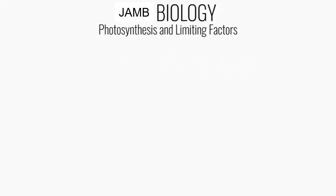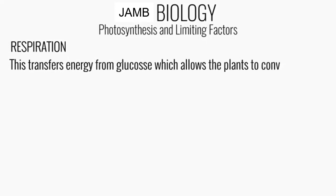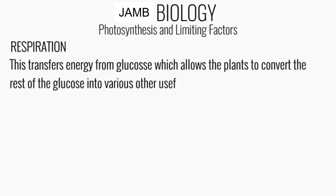Plants use glucose in five main ways. Number one is for respiration. This transfers energy from glucose, which allows the plant to convert the rest of the glucose into various other useful substances.